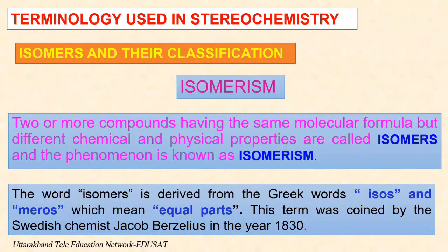In organic chemistry, isomerism can be defined as two or more compounds having the same molecular formula but different chemical and physical properties are called isomers, and the phenomenon is known as isomerism. From the Greek word isos meaning equal and meros meaning part, a concept and term introduced by the Swedish scientist Jacob Virgilius in 1830.